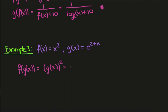g of x squared but g of x is e to the 2 plus x and we can simplify this if we want by index laws we just multiply the top which is just e to the 4 plus 2x.